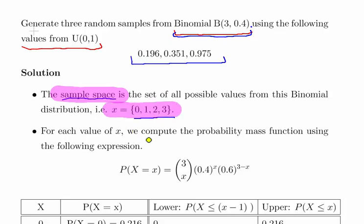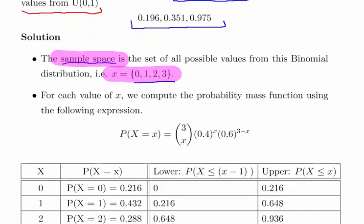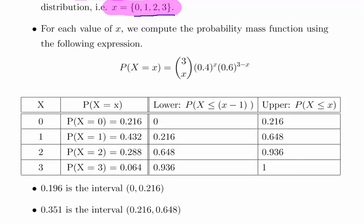Now, working on the basis that you're familiar with the binomial distribution and you've seen this formula before, where n equals 3 and p equals 0.4, I've put in those values. So 3 choose x for x equals 0, 1, 2, and 3, and so on.